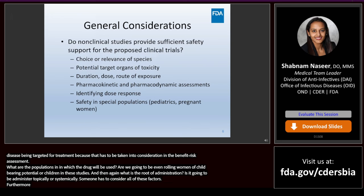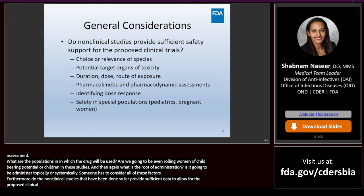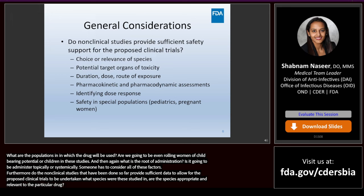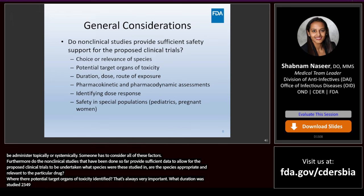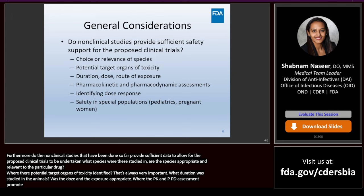Furthermore, do the non-clinical studies provide sufficient data to allow for the proposed clinical trials to be undertaken? What species were they studied in — are the species appropriate and relevant to the particular drug? Were there potential target organs of toxicity identified? What duration was studied in the animals? Was the dose and route of exposure appropriate and similar to what is being proposed in human studies? Were the PK and PD assessments appropriate? Was there a dose response identified? And do we need any special studies in animals if one is planning to enroll children or pregnant women?